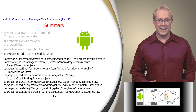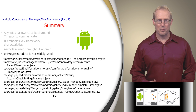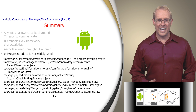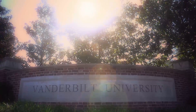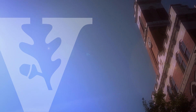The onProgressUpdate method is not as widely used in Android as the other async task hook methods, although there are some example usages, as shown at these path names.